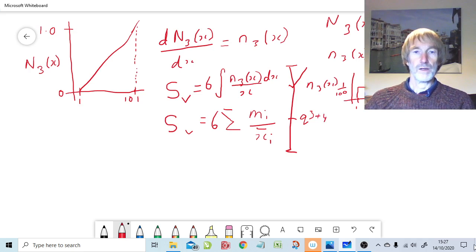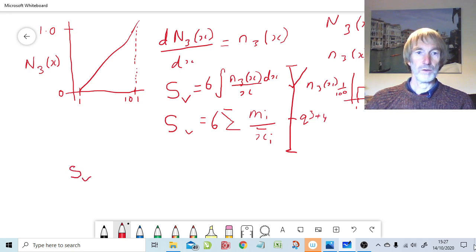If we are using our continuous function then we're talking about six integral one to a hundred and one and the n3x is one over a hundred. That, of course, is a constant. So we can take one over a hundred outside. That just becomes six over a hundred and that then becomes integral of dx over x, as simple as that.